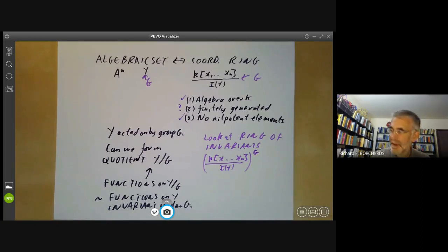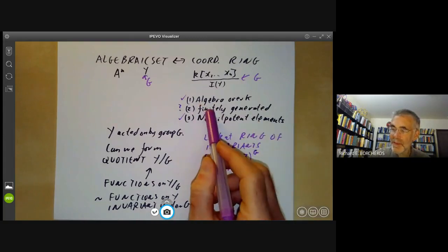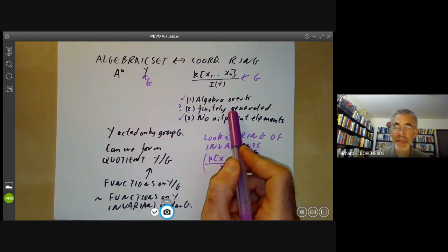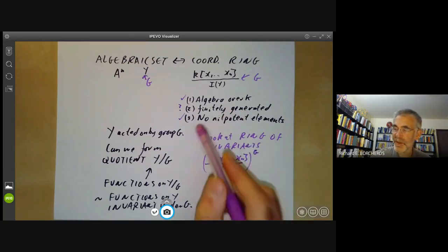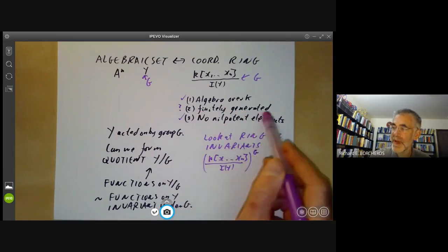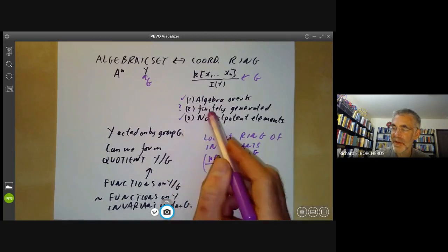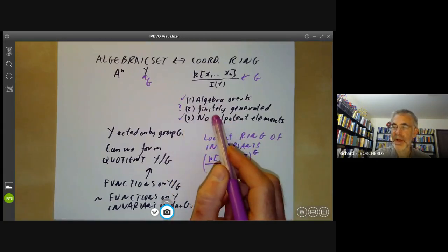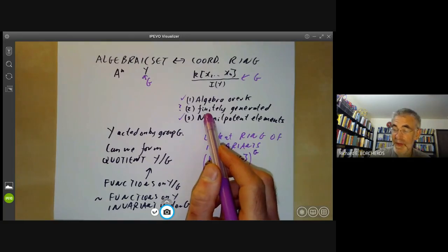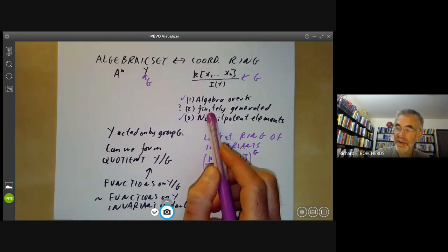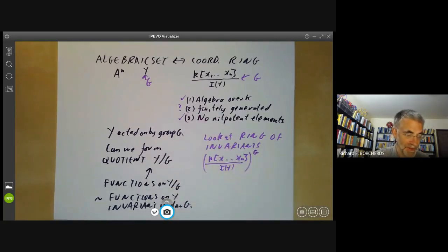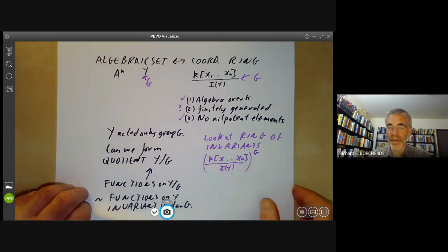And the answer is sometimes it is finitely generated and sometimes it isn't, and in general it can be quite tricky to work out which. So Hilbert proved that in many cases it was finitely generated and seems to have thought that it was quite likely that it would always be finitely generated, but in the 1950s Nagata actually found an example where this ring of invariants was not finitely generated. So it's actually a fairly tricky problem. Anyway, let's look at a few examples of this.